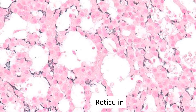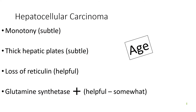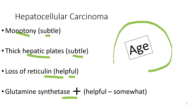This is really helpful — the reticulin stain. It's not the most perfect example of loss of reticulin framework, but there is definitely some loss, and this is the best ancillary test I have. Tallying the evidence: there's monotony, thickened plates — both somewhat subtle — and a significant loss of reticulin fibers, which I'm hanging my hat on. The glutamine synthetase is helpful, though not diagnostic in itself. The patient's age — a large mass in an elderly male — is extremely helpful. Altogether, I feel fairly comfortable calling this an HCC.